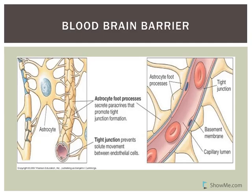The blood-brain barrier consists of very tight junctions in the blood vessels maintained by factors secreted by astrocytes. It keeps certain substances out of nervous tissue — things that could excite or damage the brain — and is very selective about what can come in and out. Glucose passes easily because the brain has a high dependence on it, and ion concentrations are carefully controlled.